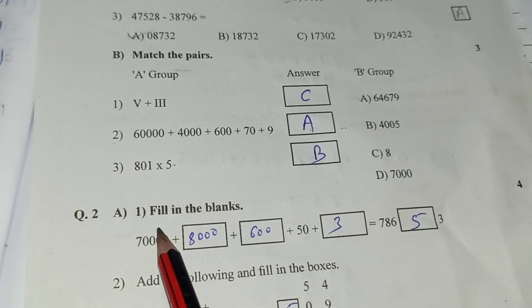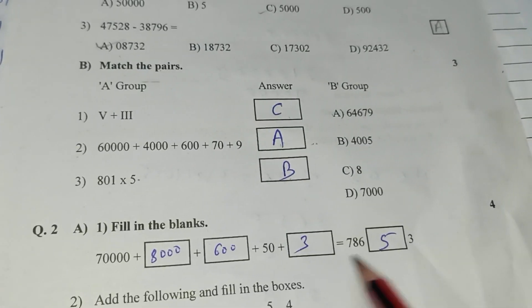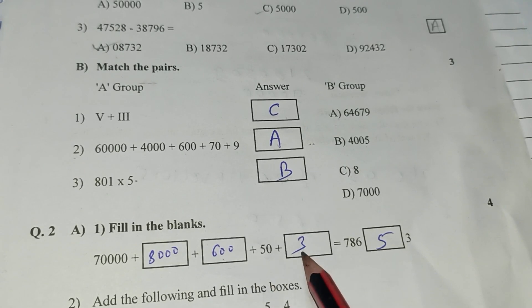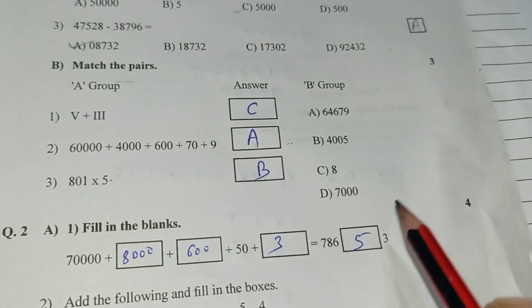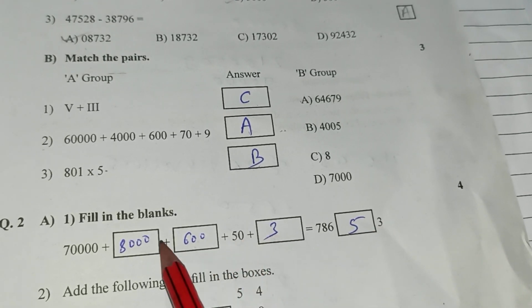Your question number first fill in the blanks. Here 8,000. Here 600. Here 3. Here 5. How? Now, here addition 3, 0, 0, 0, 3.